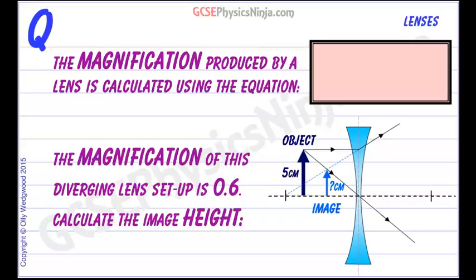We can calculate the magnification produced by a lens using the equation: magnification equals image height divided by object height.